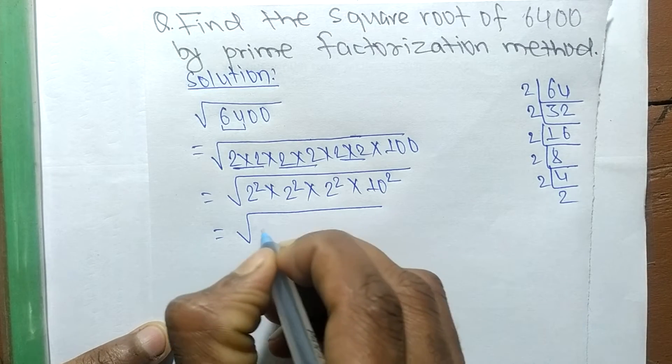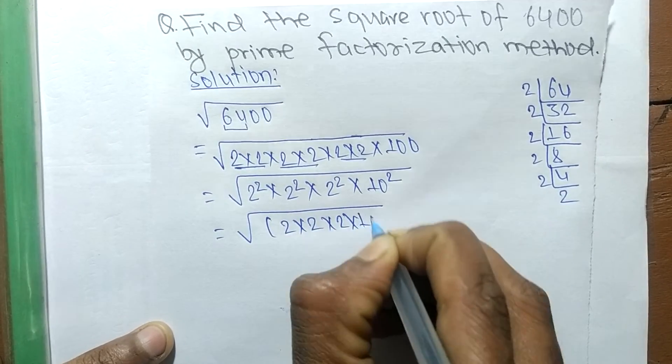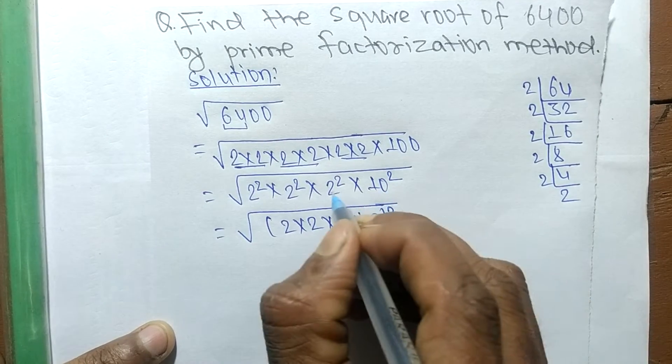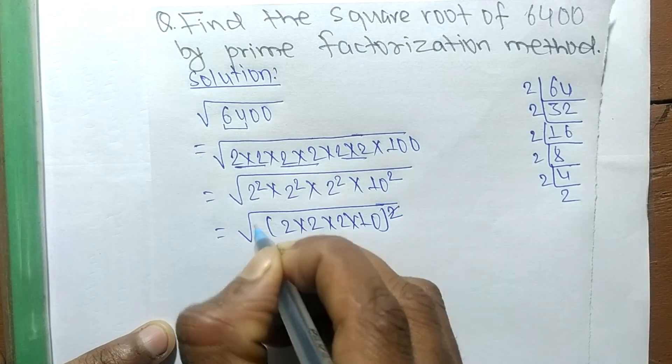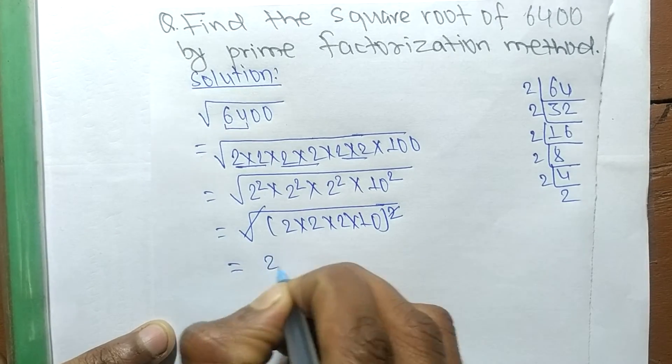So we can write 2 into 2 into 2 into 10 whole square. We took a square common from all, so the square root and the square would cancel each other. The remaining numbers are 2 into 2 into 2 into 10.